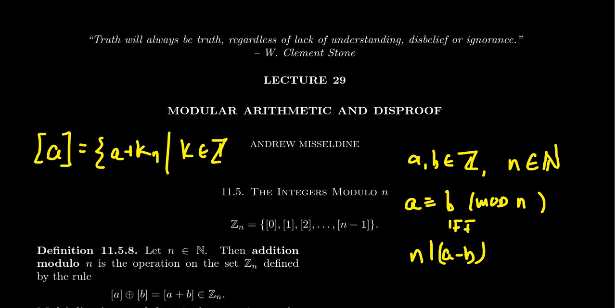We've talked about how this forms an equivalence relation. We use the symbol bracket-a-bracket to represent the equivalence class — the collection of all numbers of the form a plus kn, where k is any integer. We call this a congruence class. You can always choose a so that it sits between 0 inclusive and n exclusive, giving us 0, 1, 2, 3, 4, up to n minus 1, because two numbers are congruent mod n if and only if they have the same remainder when divided by n.